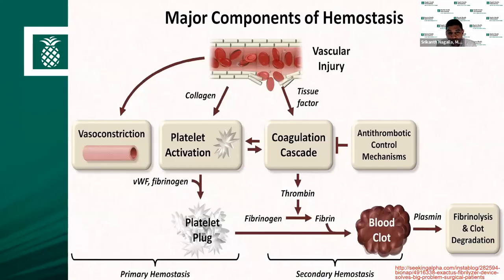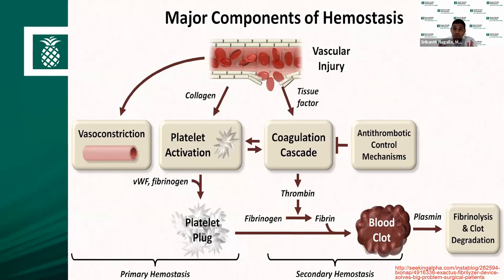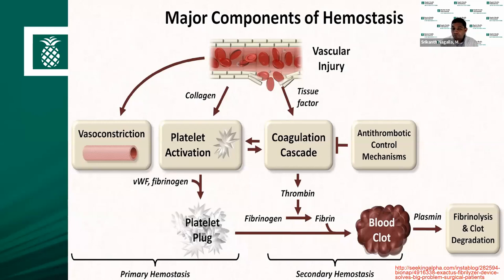The major components of hemostasis include the blood vessel, connective tissue with collagen, and the von Willebrand factor. Whenever you cut yourself, there's vascular constriction, platelet activation when platelets come in contact with collagen, and von Willebrand factor is released from Weibel-Palade bodies, causing platelet activation and platelet plug formation. Subsequently, you have activation of the coagulation cascade with tissue factor released, and finally fibrinogen is converted to fibrin, forming a stable clot. Primary hemostasis involves the blood vessels, connective tissue, von Willebrand factor, and platelets. Defects in these components lead to primary hemostatic defects.